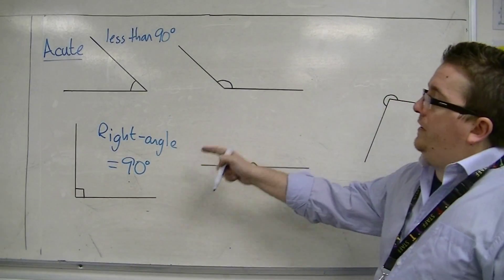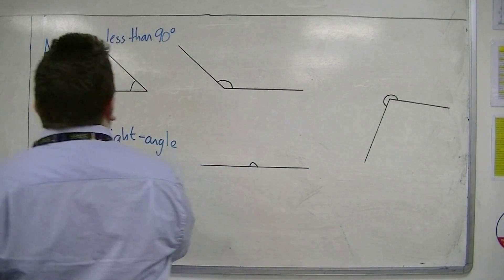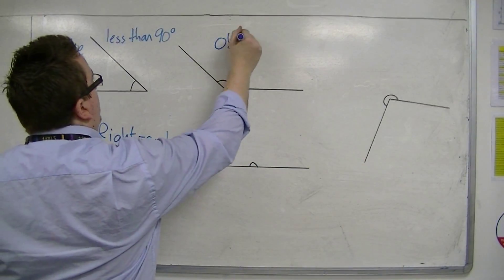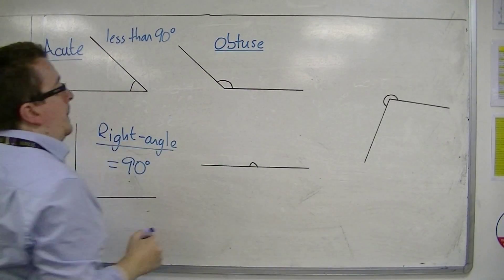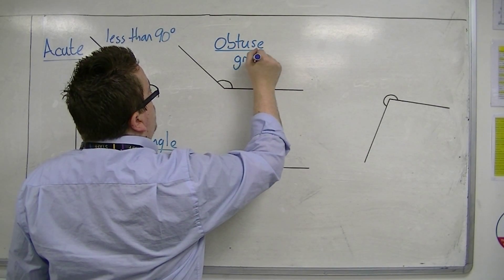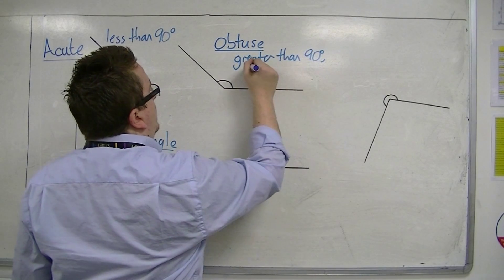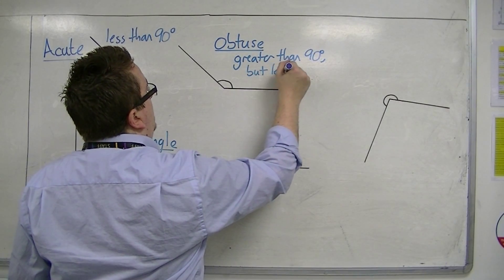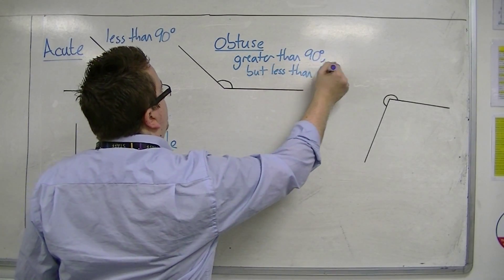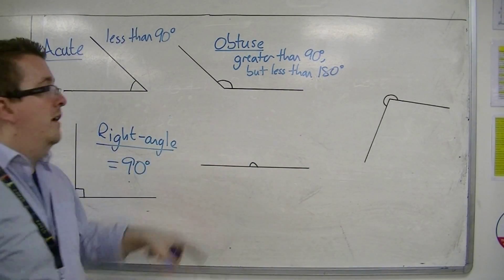Once you get past 90 degrees, then you get on to one that is known as obtuse. This is an obtuse angle. Obtuse angles are greater than 90 but less than 180. If they're equal to 180 degrees, then you reach the straight line.